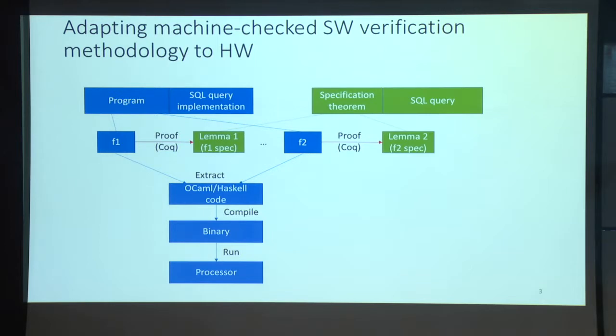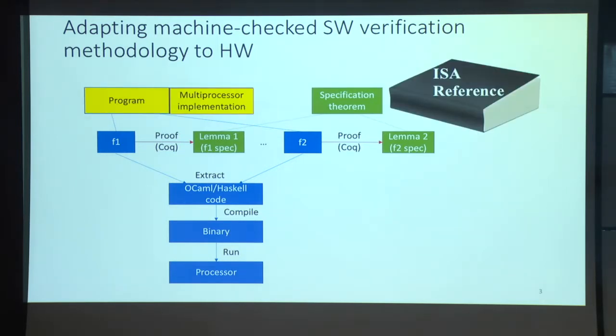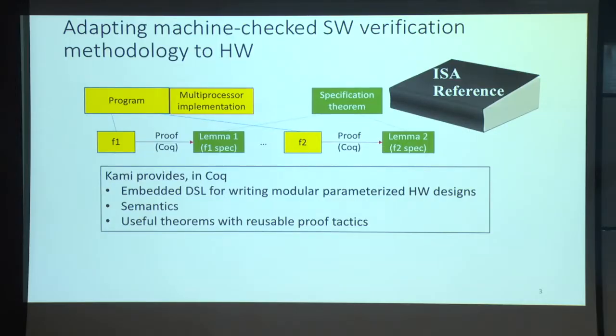We want to replicate this verification methodology for hardware. Instead of writing software programs, we want to write hardware programs — for example, a multiprocessor implementation — and verify that it obeys the multi-core ISA specification. These hardware systems are written as a collection of hardware components, and each component has its own specifications. We provide the infrastructure called KAMI, which has a DSL in Coq to describe the hardware, a semantics defined in Coq, and several useful theorems and proof automation tactics to prove that each component obeys its specification lemmas.